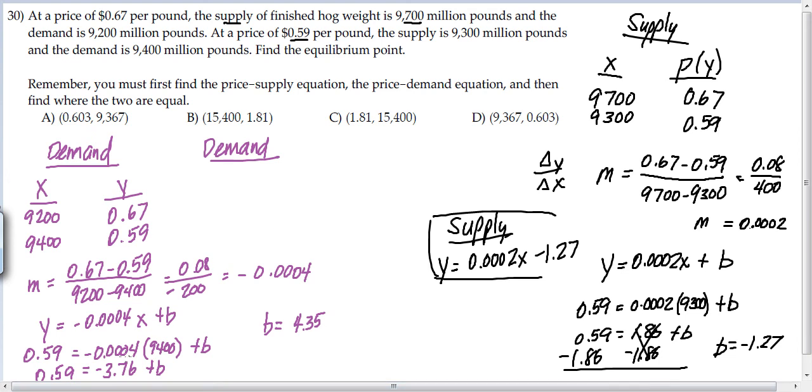And so I did those same steps I did over there. I went ahead and wrote the equation negative 0.0004X plus B, substituted 0.59 and 9,400 to solve for B, which was 4.35. So then we have the demand equation is Y equals negative 0.0004X plus 4.35.